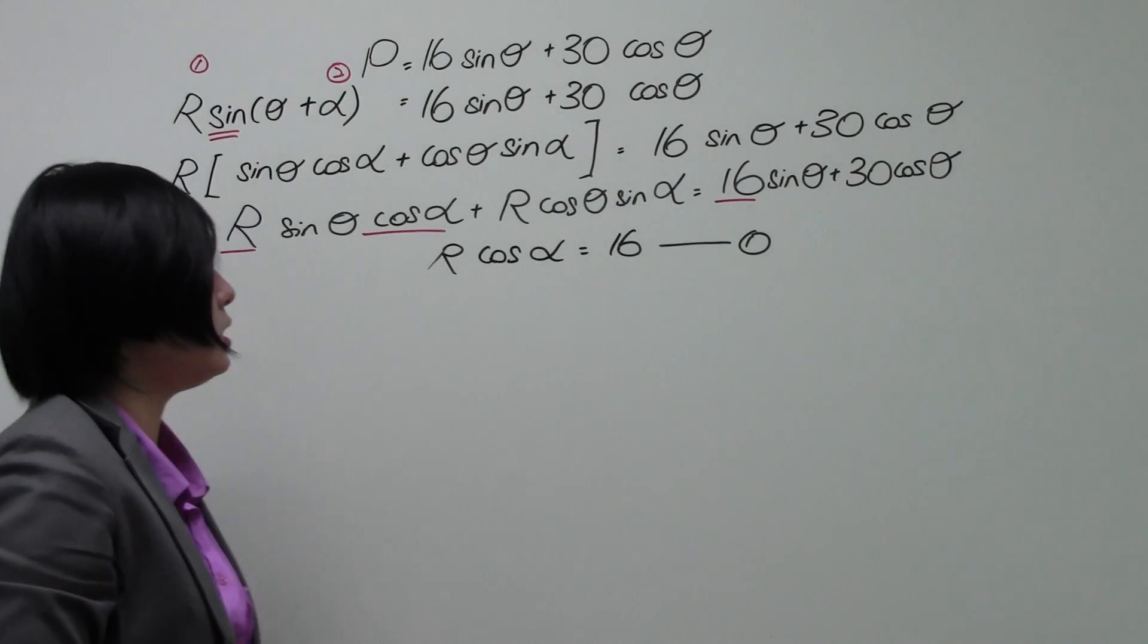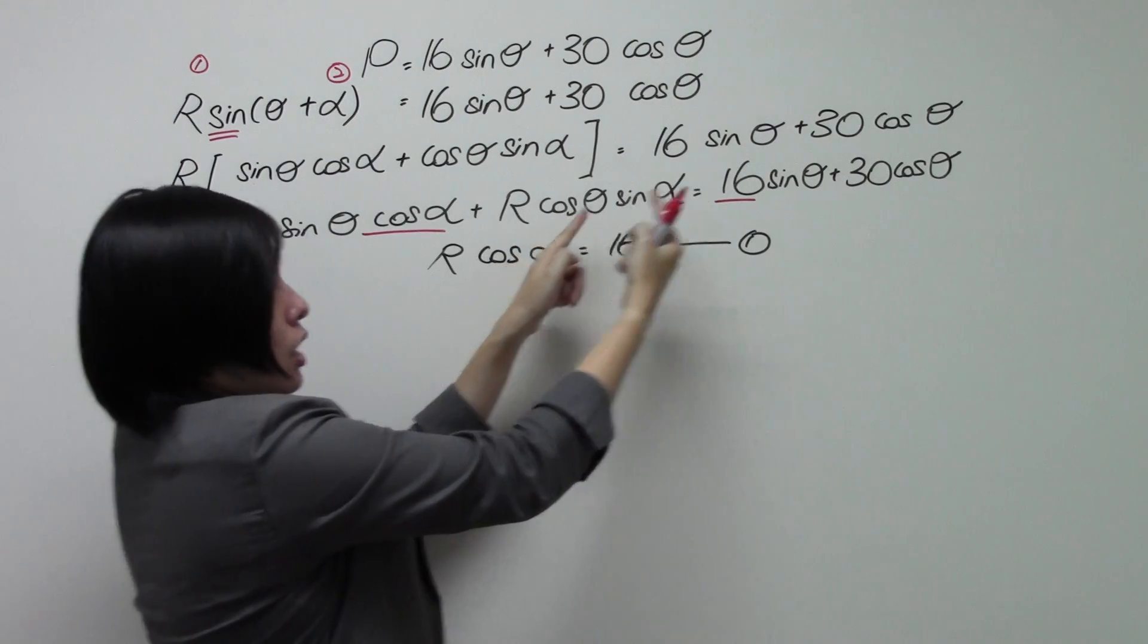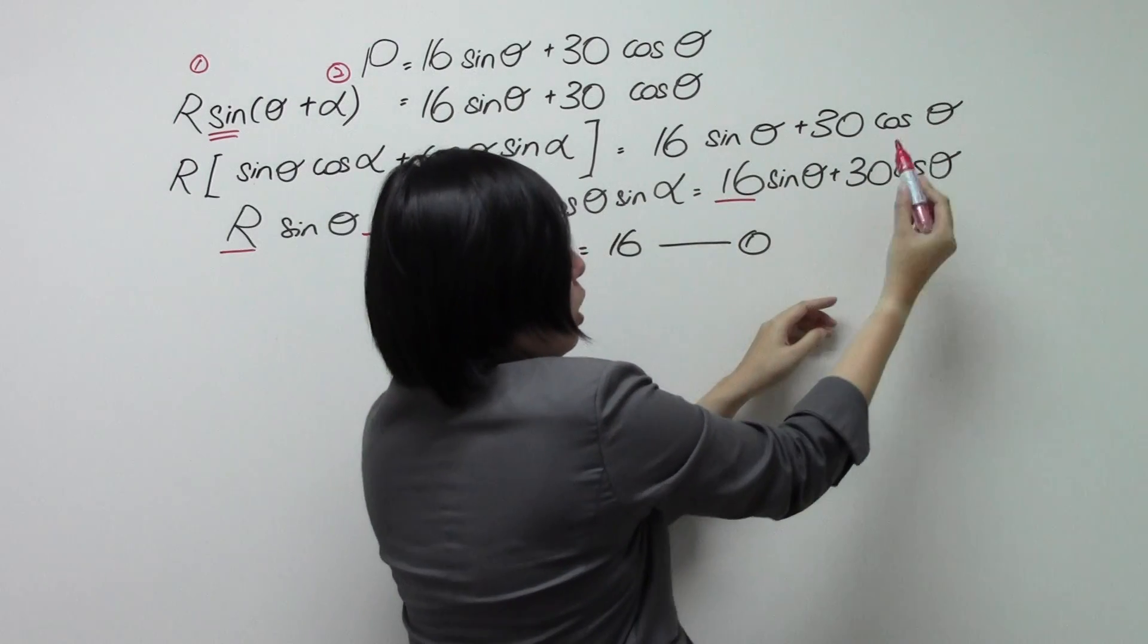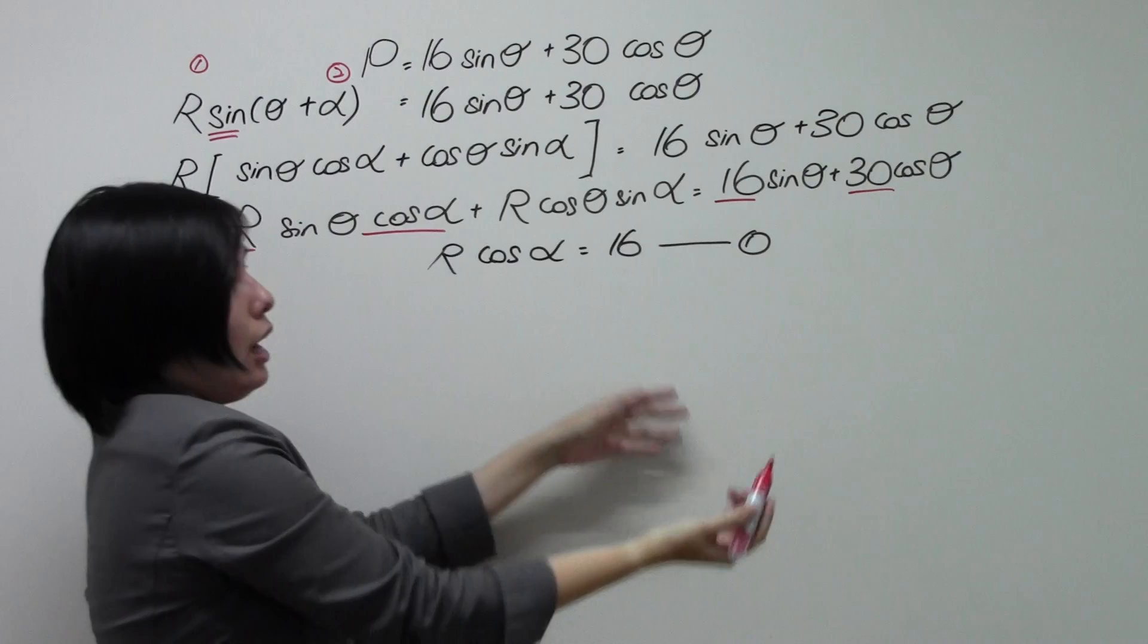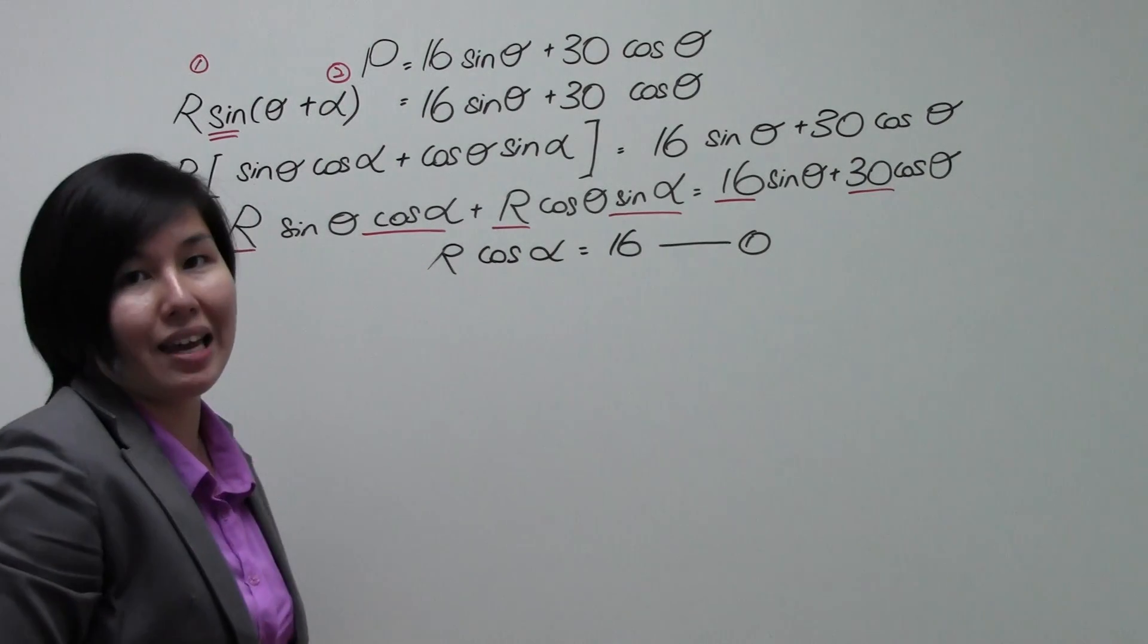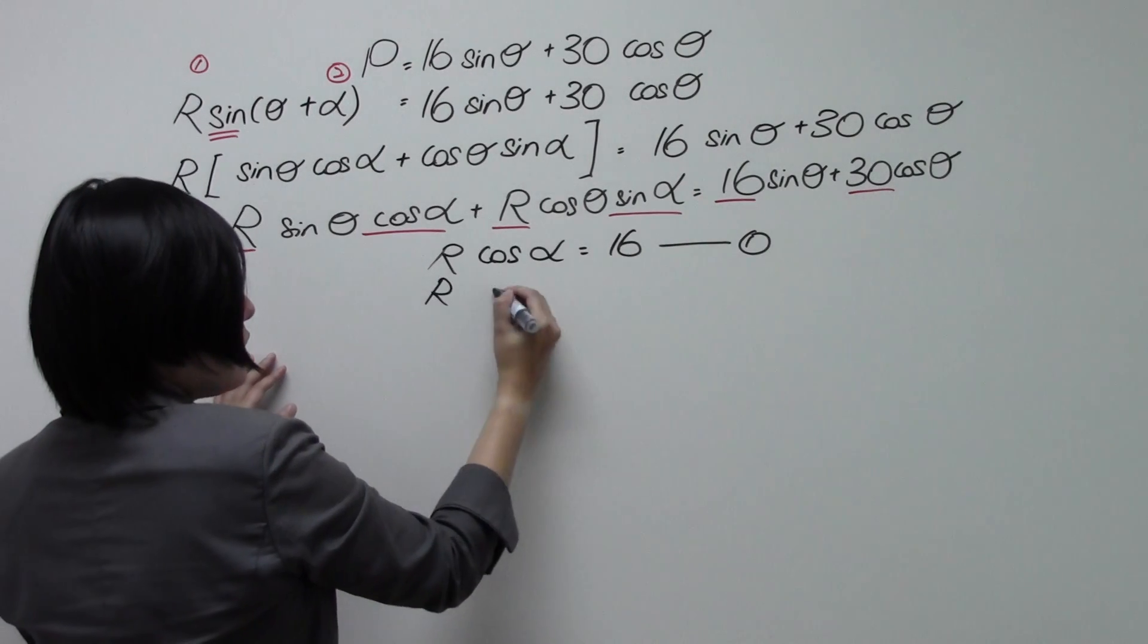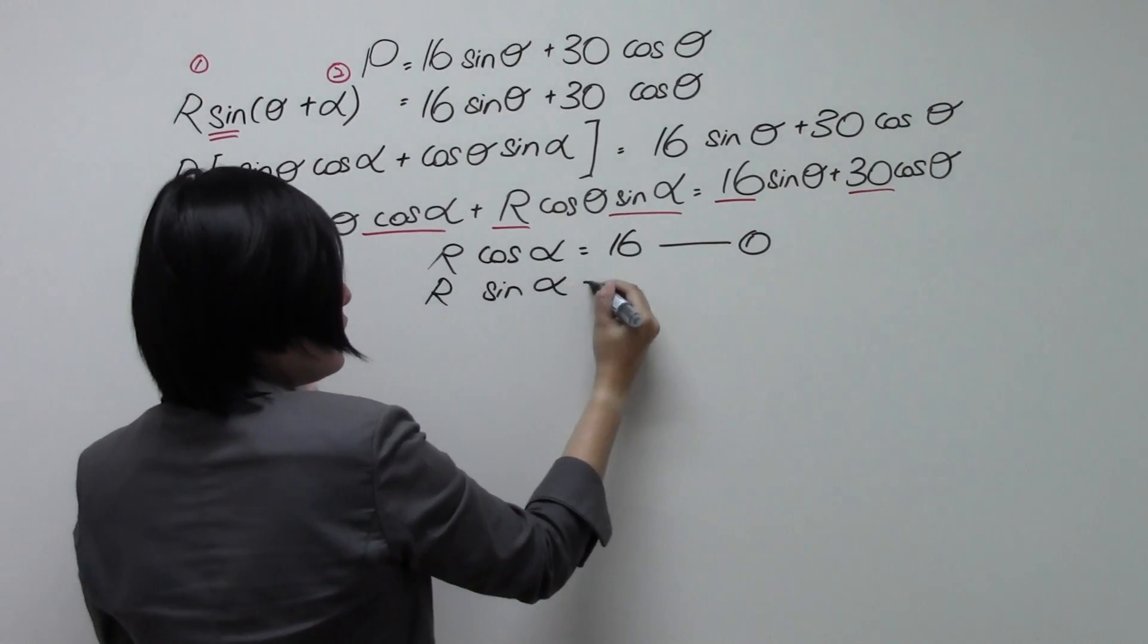Let's repeat the same procedure again. This time round, we're going to the next term, which is cosine theta over here. You have a cosine theta over here. Coefficient 30. And on the left hand side, we are left with R sine alpha. So that will be your second equation. R sine alpha is equal to 30.